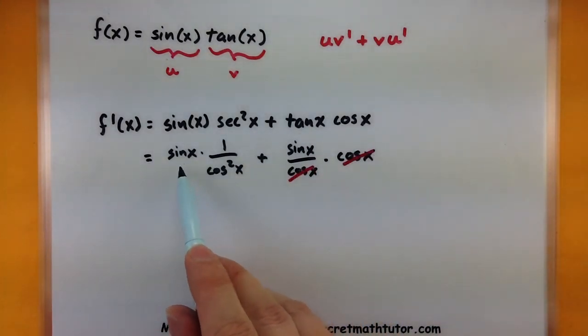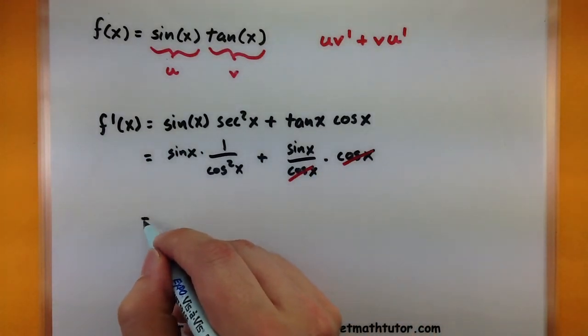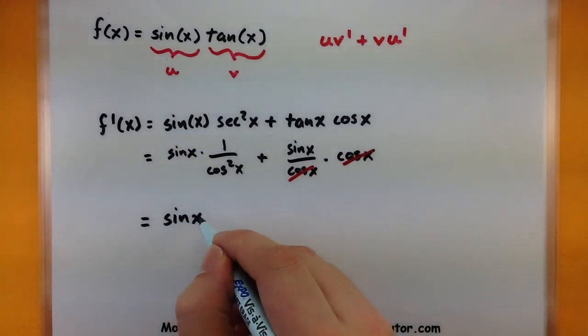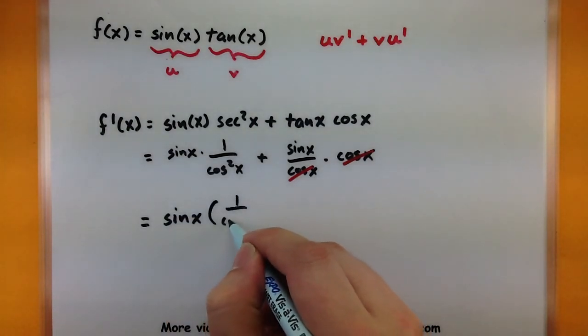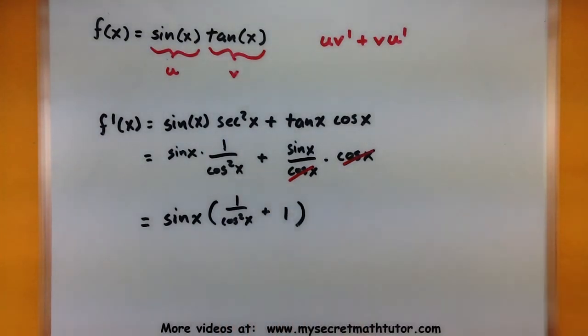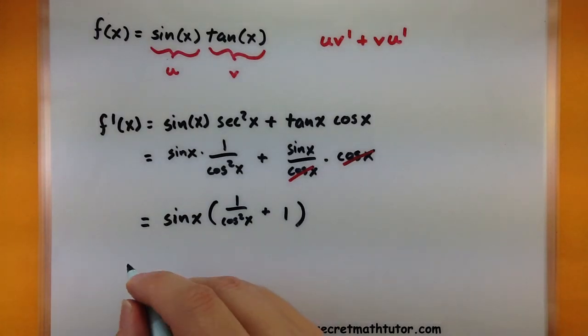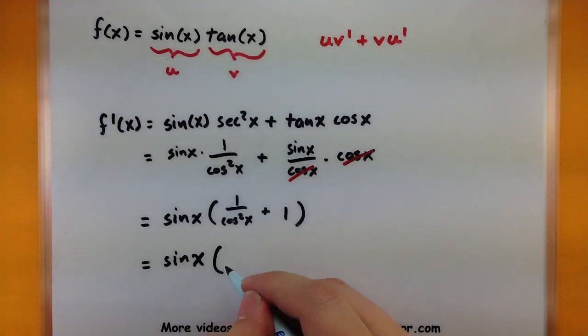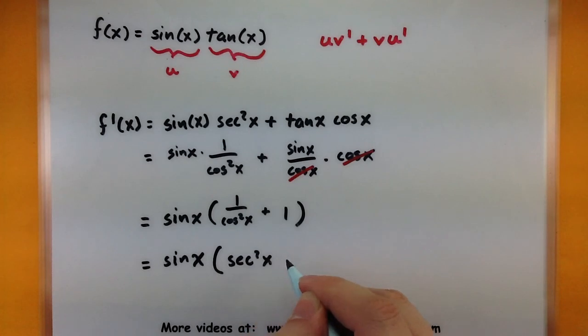And look at that, we have a common sine of x over here and another one over here. So we could actually take a sine of x out of both places. So 1 all over cosine squared x plus 1. I think that's about all that will simplify. So let's go ahead and rewrite it back into our other trigonometric functions. So I have sine of x multiplied by our secant squared of x plus 1.